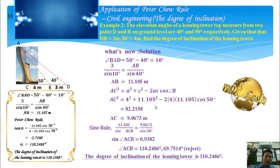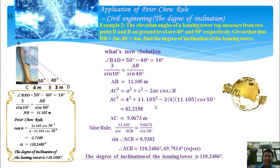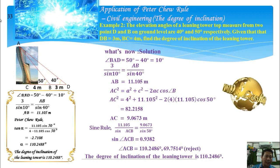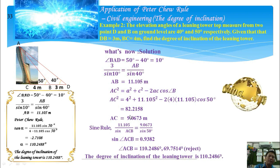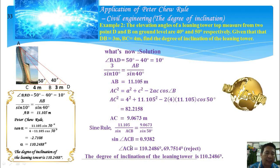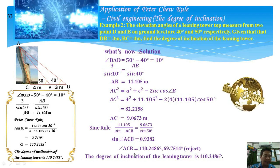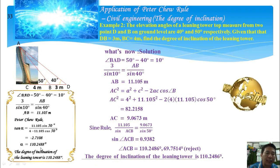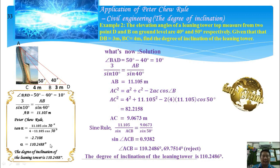Let me give an example of the application of Peter Chiu Rule in civil engineering. If we want to find the degree of inclination of a leaning tower, the current approach requires using the cosine rule to find the true height AC first, then the sine rule to find the degree of inclination. But by using Peter Chiu Rule, we can directly get the degree of inclination easily and more accurately — in just three steps.